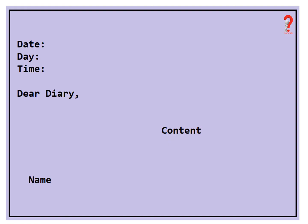This is the format of writing a diary. You should mention the date, time, and you can address your diary as 'Dear Diary'. Or you can give any name to your diary. Then you start writing the content — whatever happened on the day, whichever things you want to share. And write your name at the end.